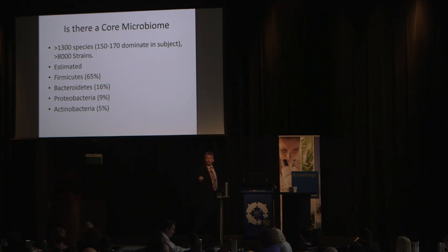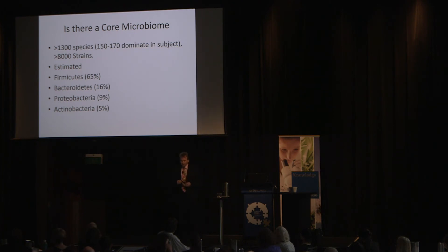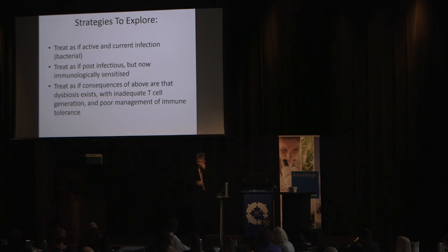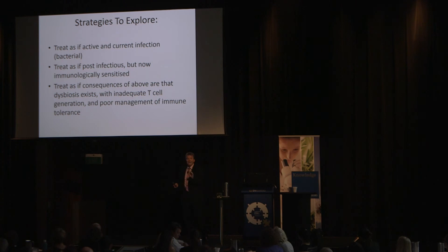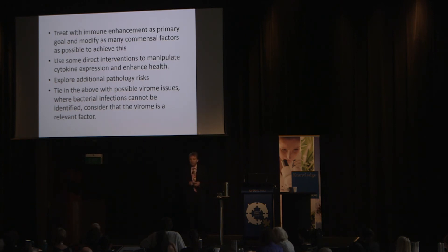One of the things to keep in mind: is there a core microbiome issue? I'm going to say this is not a viral problem, not a parasitic problem — this is a bacterial problem. A core microbiome has at least 1,300 species of 8,000 different strains or more, divided into principal groups: Firmicutes, Bacteroidetes, Proteobacteria, and Actinobacteria. I could treat it if it's an active current infection, or as a post-infectious event that's now immunologically sensitized, or as dysbiosis with inadequate T-cell generation and poor management of immune tolerance.